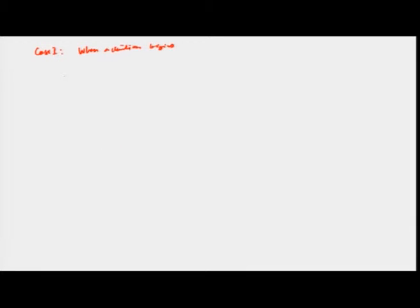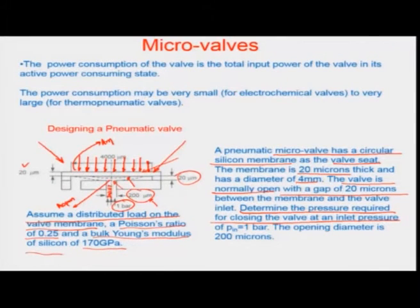In case 1, when actuation begins, we have P_act on one side with membrane area A_m = π·R_m², where R_m is 2 mm radius of the circular valve. This equals the inlet pressure times π·R_m², because at the beginning of actuation the whole inlet pressure is available on the lower side of the membrane — the membrane has not yet deflected or moved.